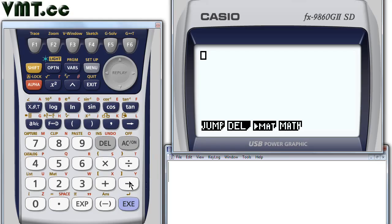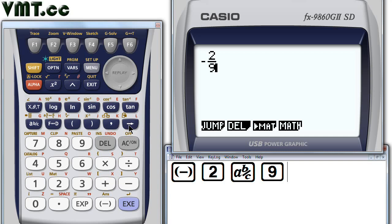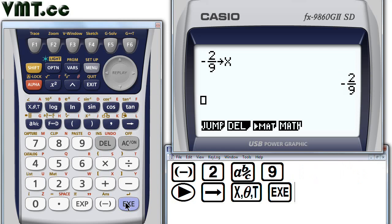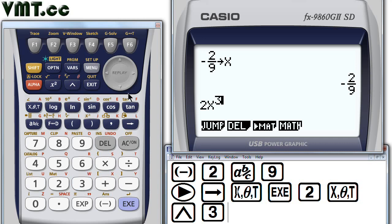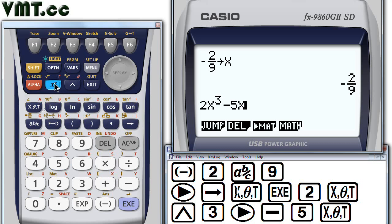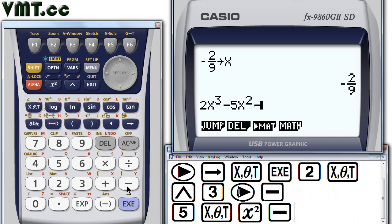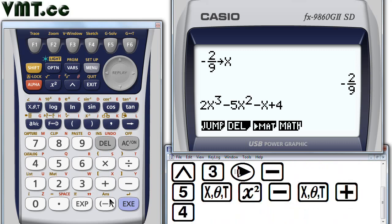Input the value negative 2 fraction 9. Get out of the fraction by pressing the right arrow key. Then store into the x variable. Execute. Now, just type in the polynomial 2x power 3. Get out of the exponent by pressing the right arrow key. Then continue. Minus 5x squared minus x plus 4. Execute.